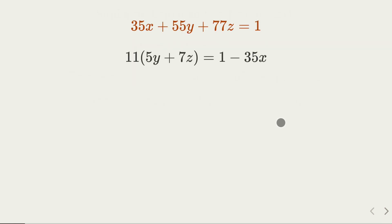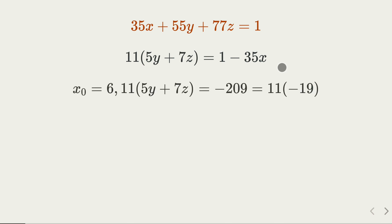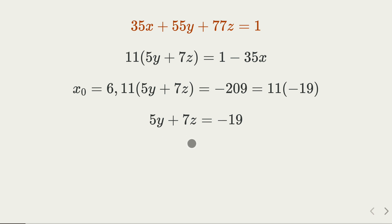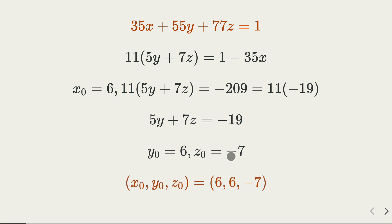How do we find a particular solution? We rewrite it — this has to be a multiple of 11, and trying x₀ = 6, the whole expression becomes 11 times negative 19, so 5y + 7z = −19. We try to find a particular solution: let y = 6 and z = −7. We've found a particular solution to the original equation.